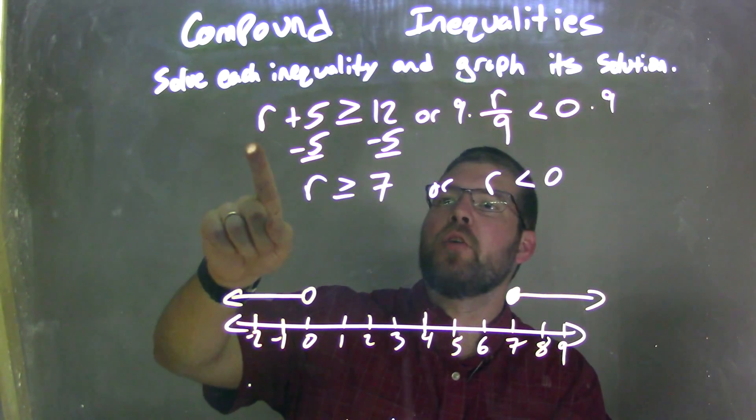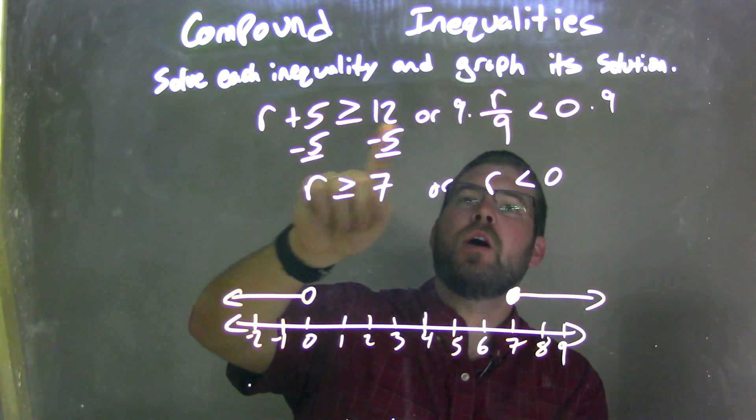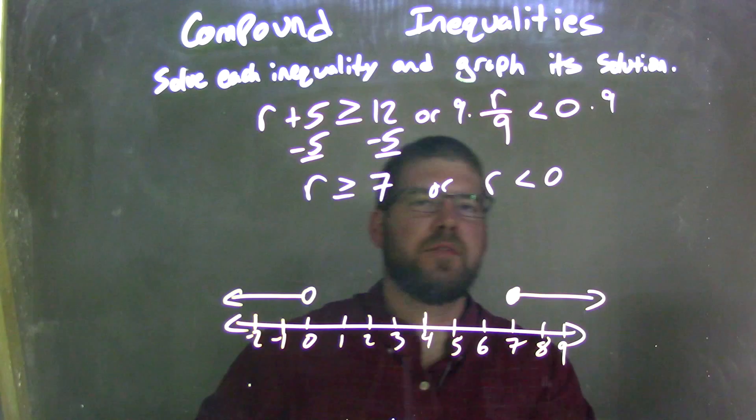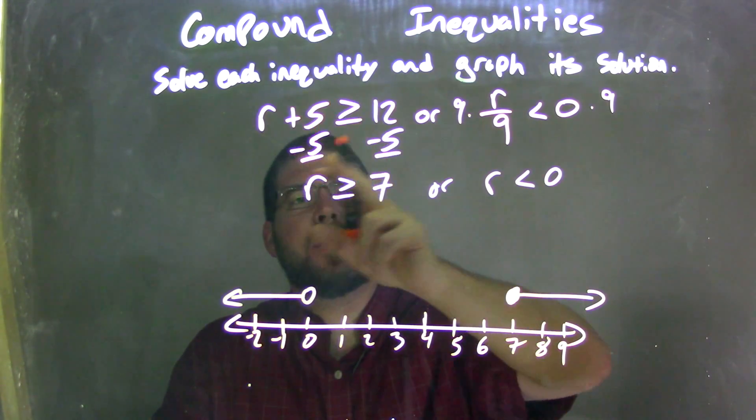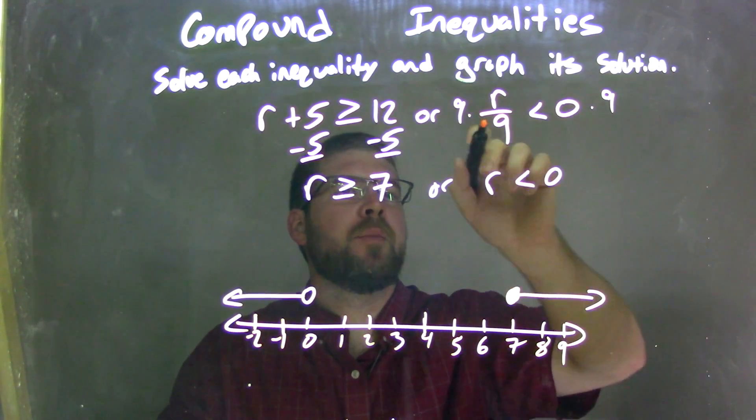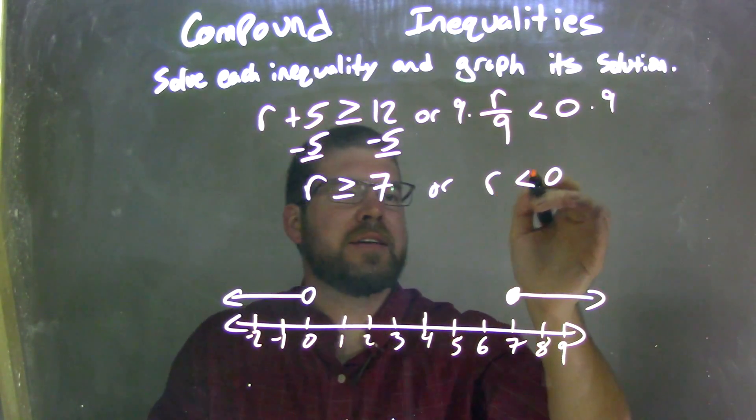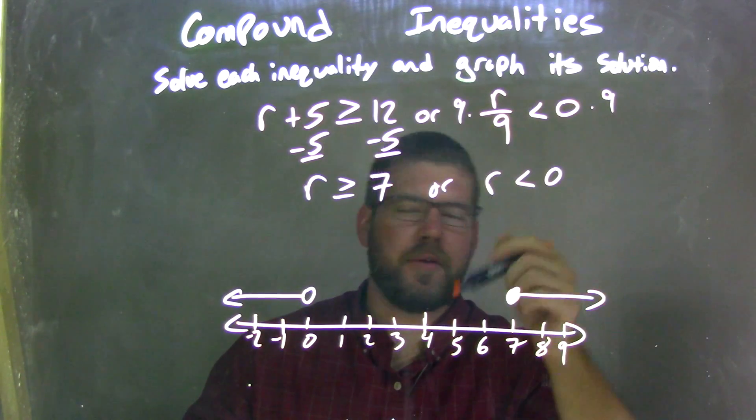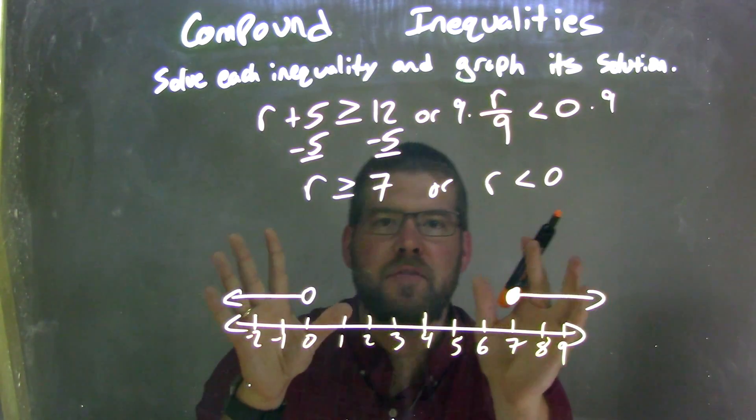So let's recap. We're given r plus 5 is greater than or equal to 12, or r over 9 is less than 0. I solved each inequality individually by subtracting 5 from both sides for this one, giving me r is greater than or equal to 7. And this one here, I multiplied by 9 on both sides, giving me r is less than 0, because 0 times 9 is 0.